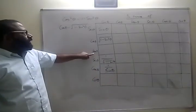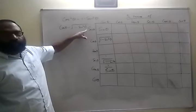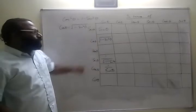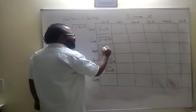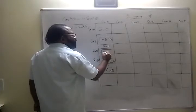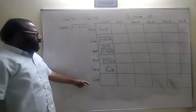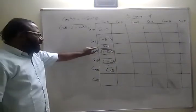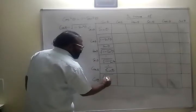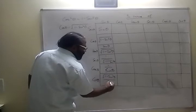Tan theta is sin theta by cos theta, so I can write it as sin theta by root of 1 minus sin squared theta. And cot theta is the reciprocal of tan theta, so it becomes root of 1 minus sin squared theta by sin theta.